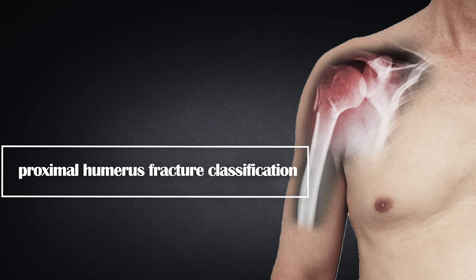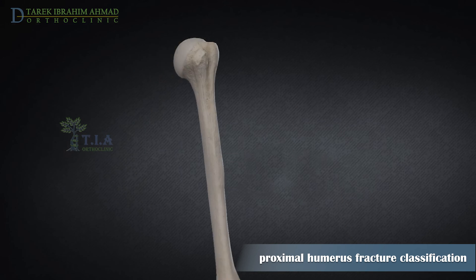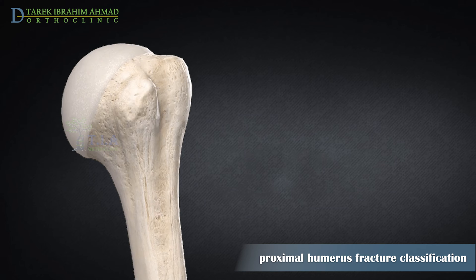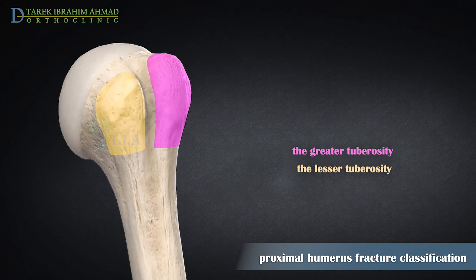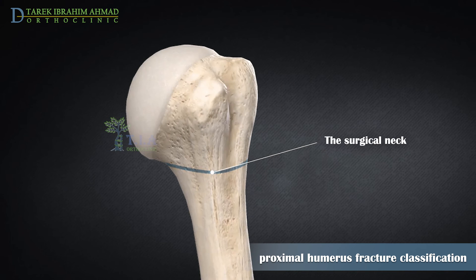Proximal Humerus Fracture Classification. The proximal humerus comprises four parts: the anatomical neck, at the base of the widened articular surface of the humeral head; the greater and lesser tuberosities, which are the sites of attachment for the tendons of the rotator cuff muscles; and the surgical neck, located at the constriction distal to the humeral head and tuberosities, where the articular capsule attaches and several penetrating arteries enter to provide part of the vascular supply to the humeral head.